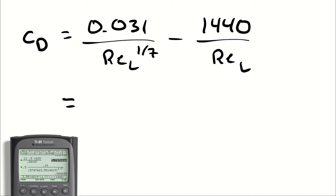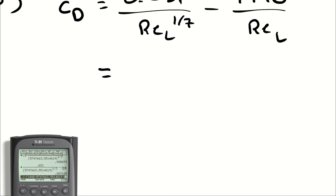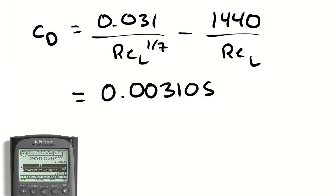Divided by the Reynolds number. And we get 0.003105. Just double check that I used the correct numbers. 1440, 0.031. We did. Hooray.